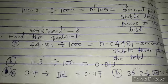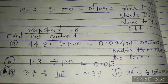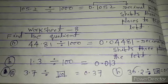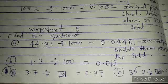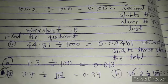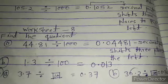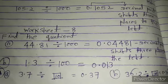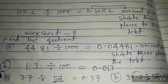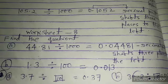In part B, 1.3 ÷ 100: the quotient is 0.013. Since there are two zeros, the decimal is shifted 2 places to the left. When 3.7 is divided, the quotient is 0.37, meaning we fill in the blank with 10, since the decimal shifts 1 place left. In question B, 36.2 ÷ blank = 0.362, so the decimal shifts 2 places left, and we place 100 in the blank.